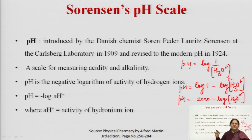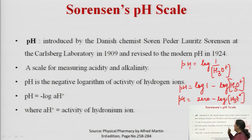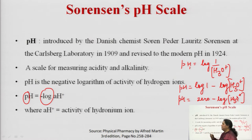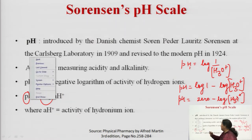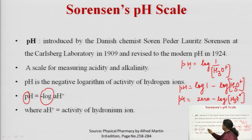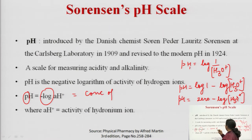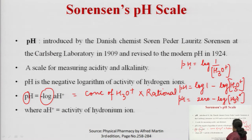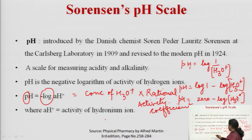pH is a scale of measuring acidity and alkalinity. It is the negative logarithm of the activity of hydronium ion concentration. In pH, the 'p' stands for the minus log, and 'H' stands for the hydronium ion concentration. 'A' here stands for the activity of hydronium ion.